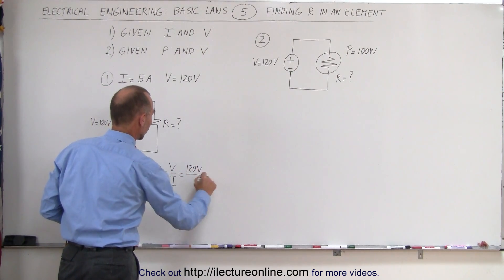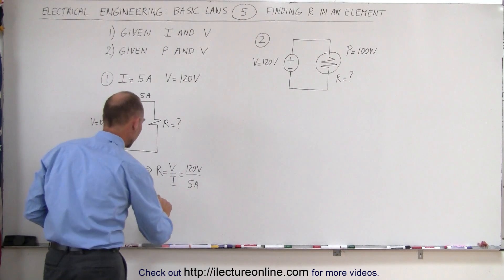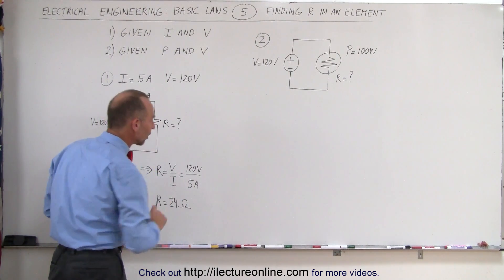We plug in the voltage, 120 volts, the current 5 amps, and 5 goes into 120, 24 times, so we know that R equals 24 Ohms. That's pretty straightforward.